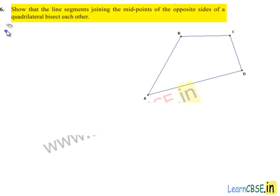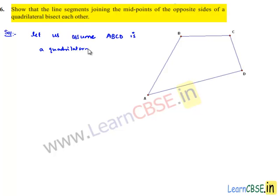Now moving on to the solution. Let us assume a quadrilateral ABCD in which P, Q, R, S are the midpoints of sides AB, BC, CD, and DA respectively.